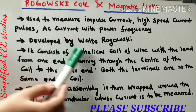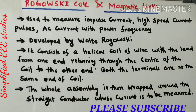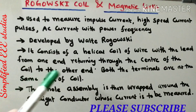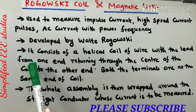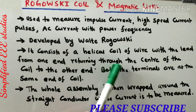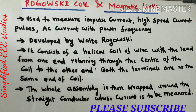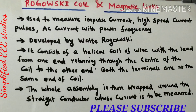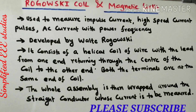It was developed by Walter Rogowski. It comprises a helical coil of wire with the lead from one end returning through the center of the coil to the other end, meaning both terminals are connected at the same end. The whole assembly is then wrapped around the straight conductor whose current is to be measured — giving it a toroidal shape.